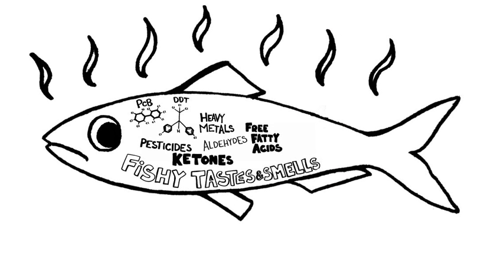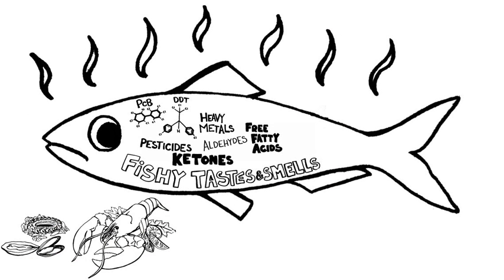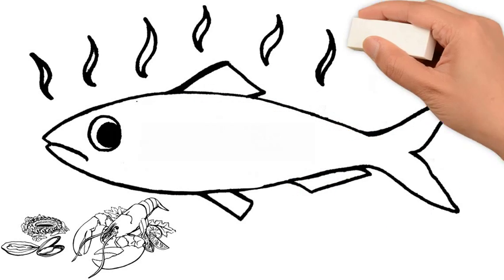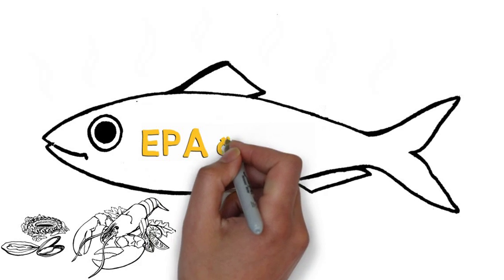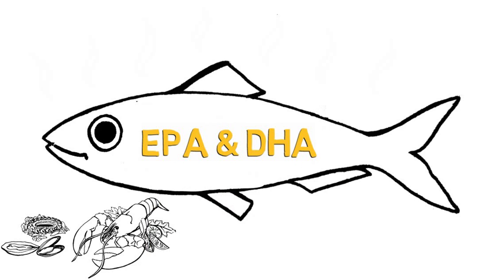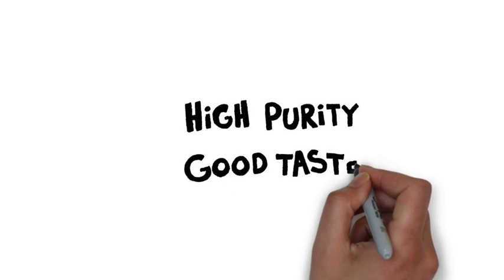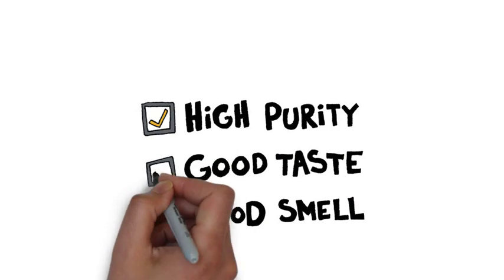While all foods that come from the ocean naturally contain these impurities, the purpose of refining is to remove them and create a supplement that has high levels of EPA and DHA. Ultimately, the end product should be a supplement with high purity that tastes and smells good.